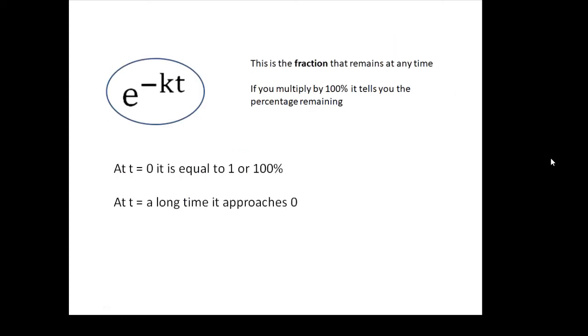Very useful, interesting little thing. e to the minus kt, this term, e to the minus kt, it's the fraction that remains at any time. It's a number between 0 and 1. At t equals 0, it's 1. There's 100% left. If you multiply it by 100%, then you get the percentage that's remaining.